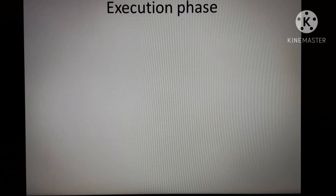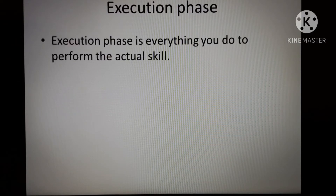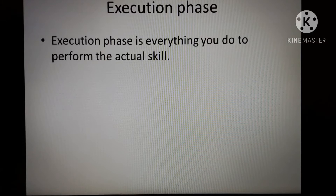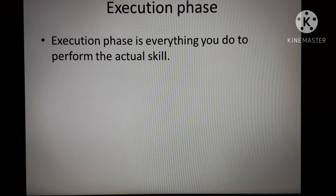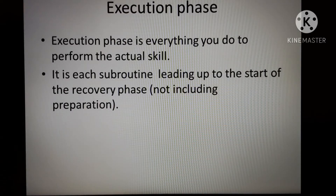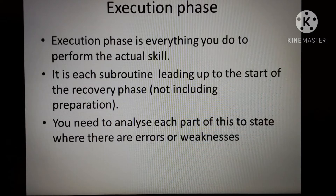The execution phase is where you almost perform the skill. Preparation is getting your body into the correct position to then execute — everything up to the point where you perform the actual skill and finish it. In football kicking, you would have kicked the ball and after the impact the execution phase is finished. In golf, from the backswing all the way through to contact with the ball is the execution phase. Make sure you're breaking your skill down into those sections, look at each sub-routine, and highlight any errors in the execution phase.